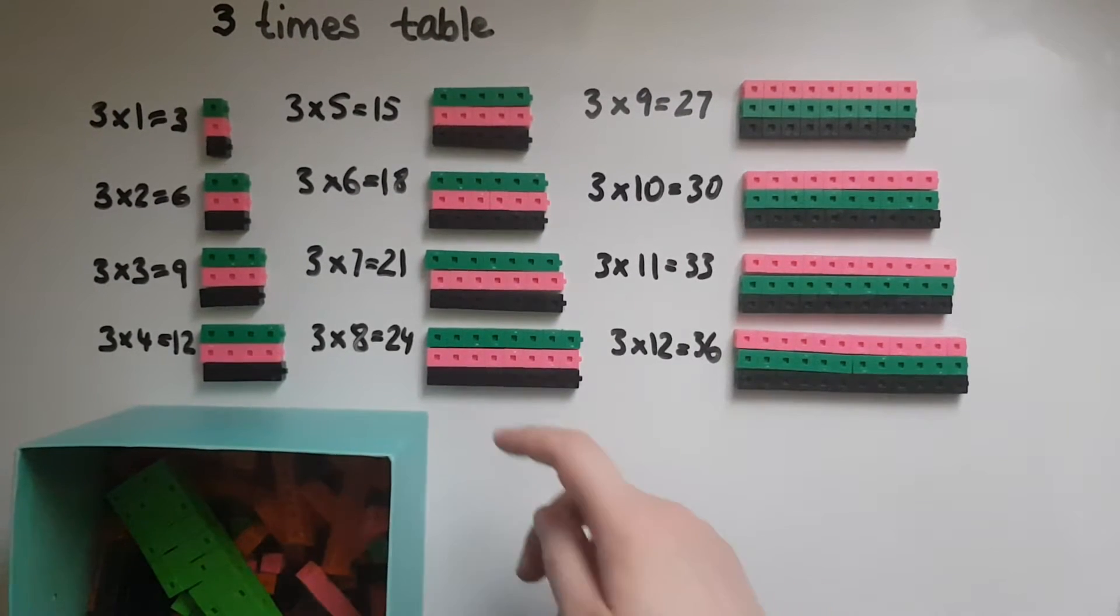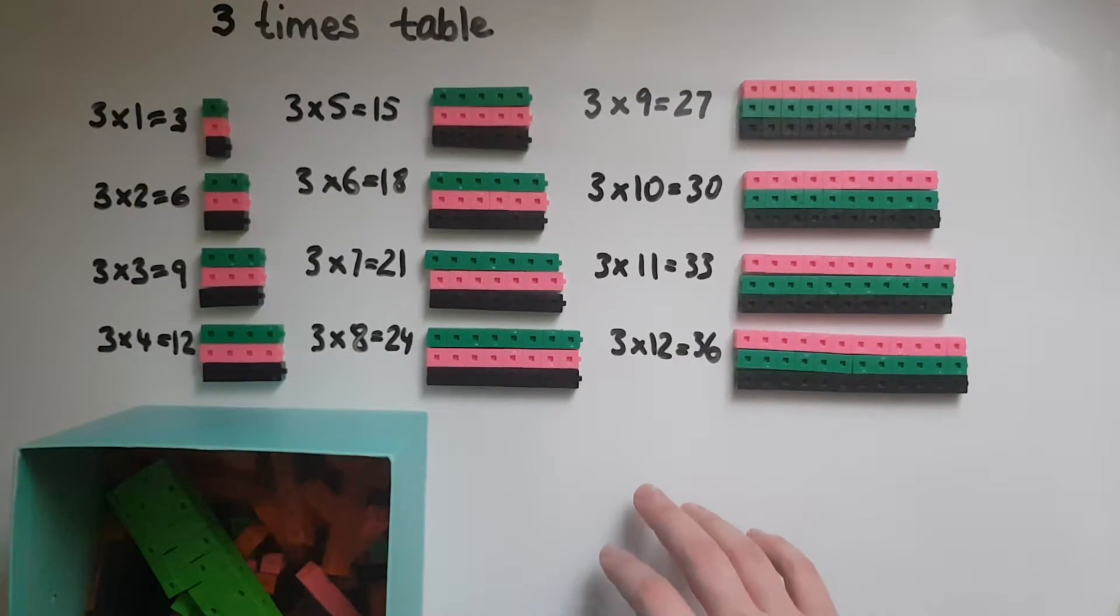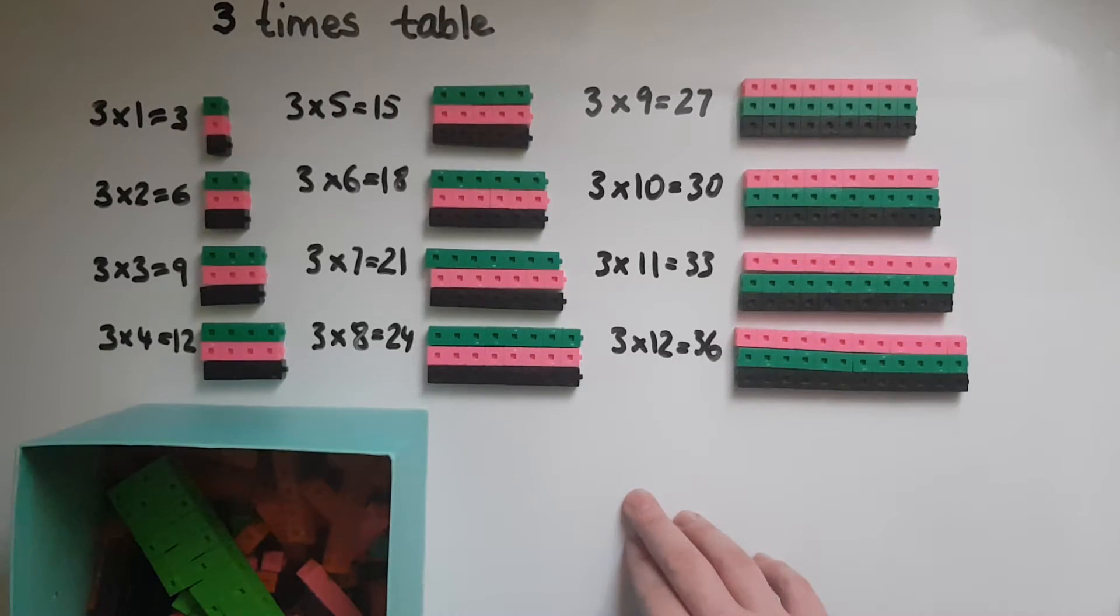So to work out three times eight, which is 24, I could go eight and eight and eight. So eight and eight is 16, and another eight is 24.